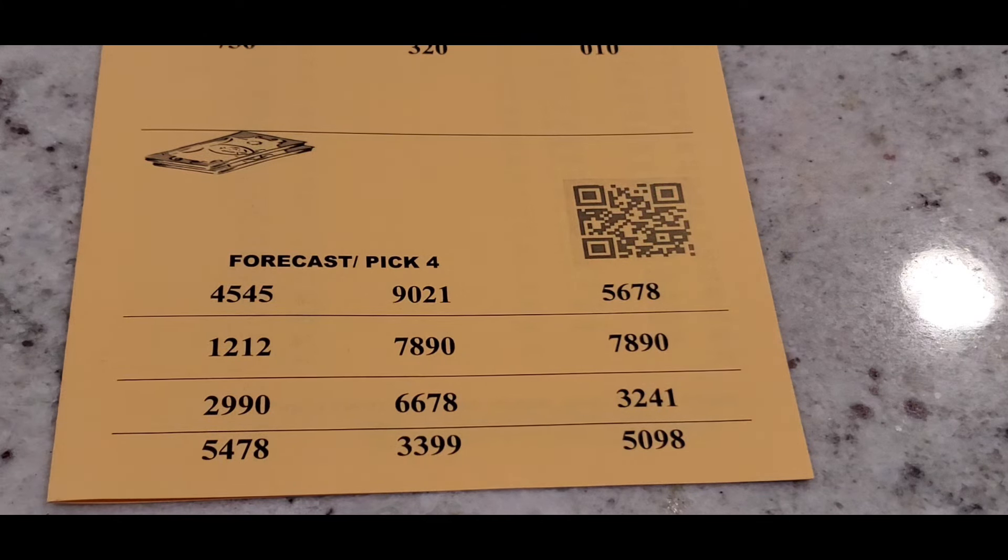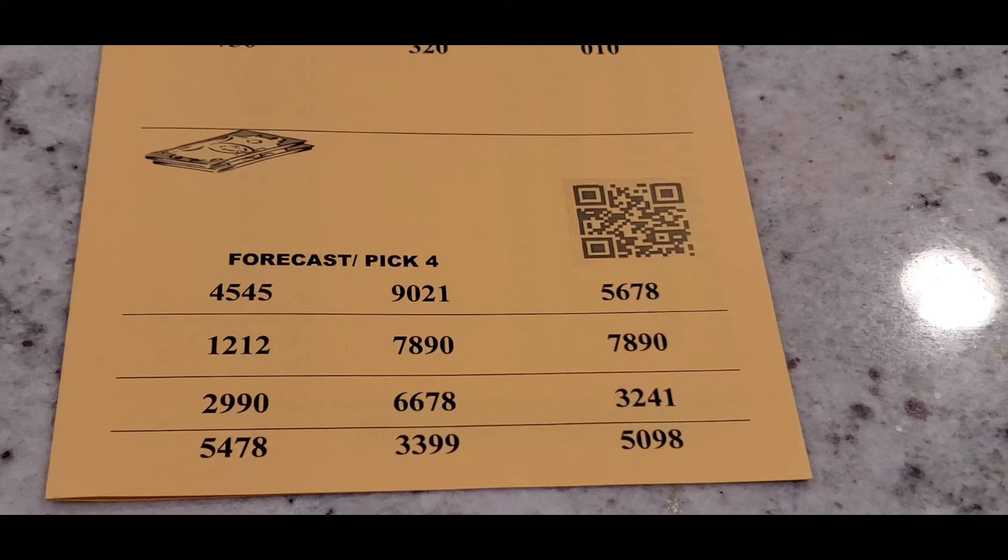Yet the 5478. And again, be mindful it seems like with this month there's a lot of duplicates going in these sheets for November. You got 7890 twice on this sheet and some of the other ones. If you check the other videos on the channel, some of the sheets have double numbers, so be mindful of that. Watch the numbers and pick carefully. Another one, 3399 and 5098. So again, you can compare that 7890 with this right here for the Illinois lottery.